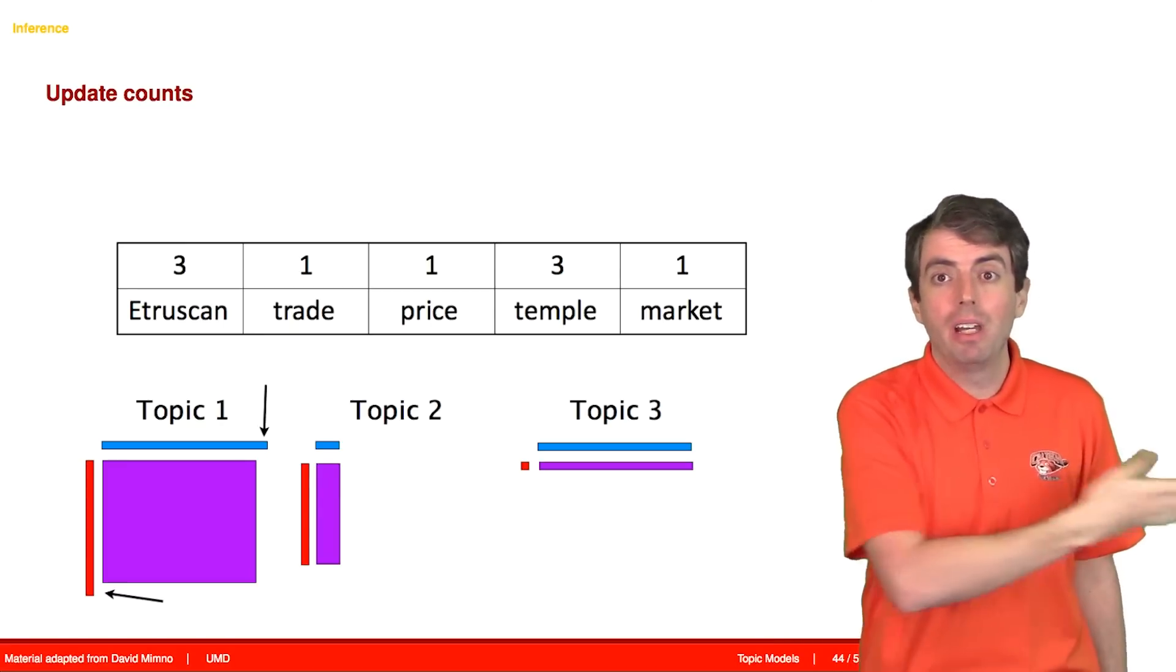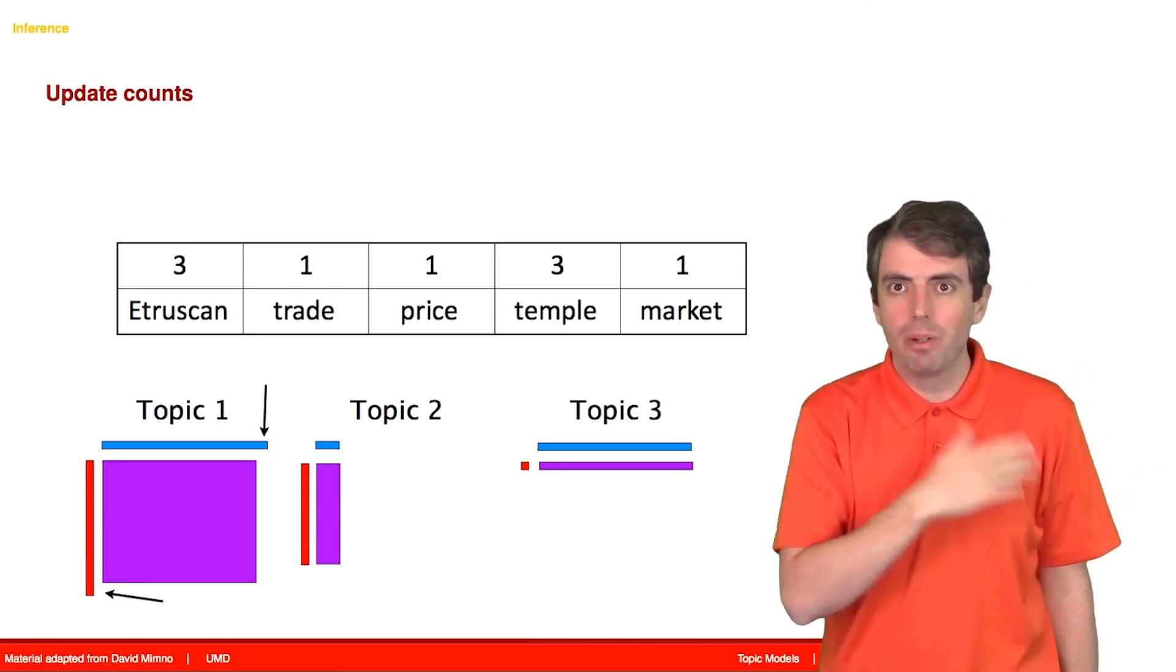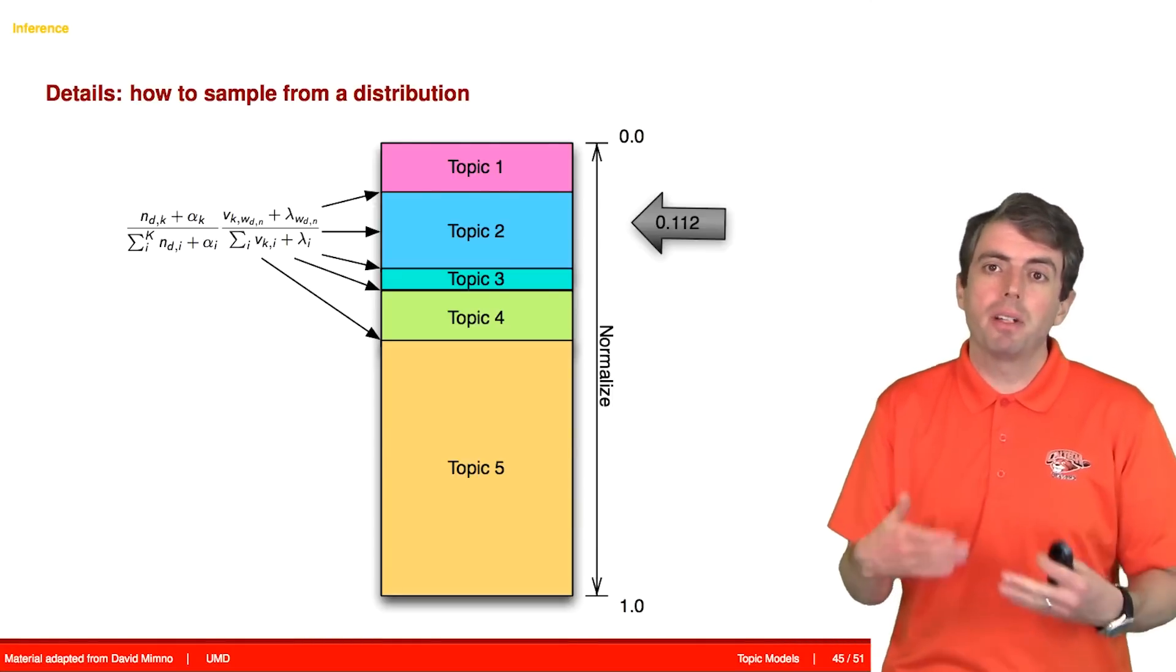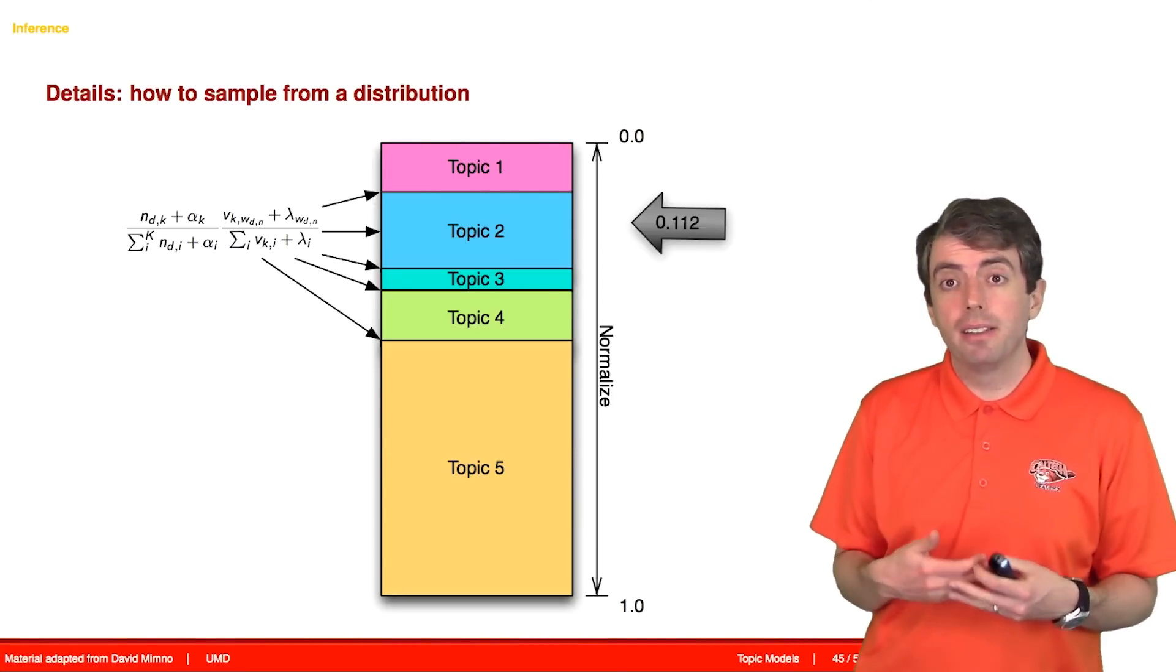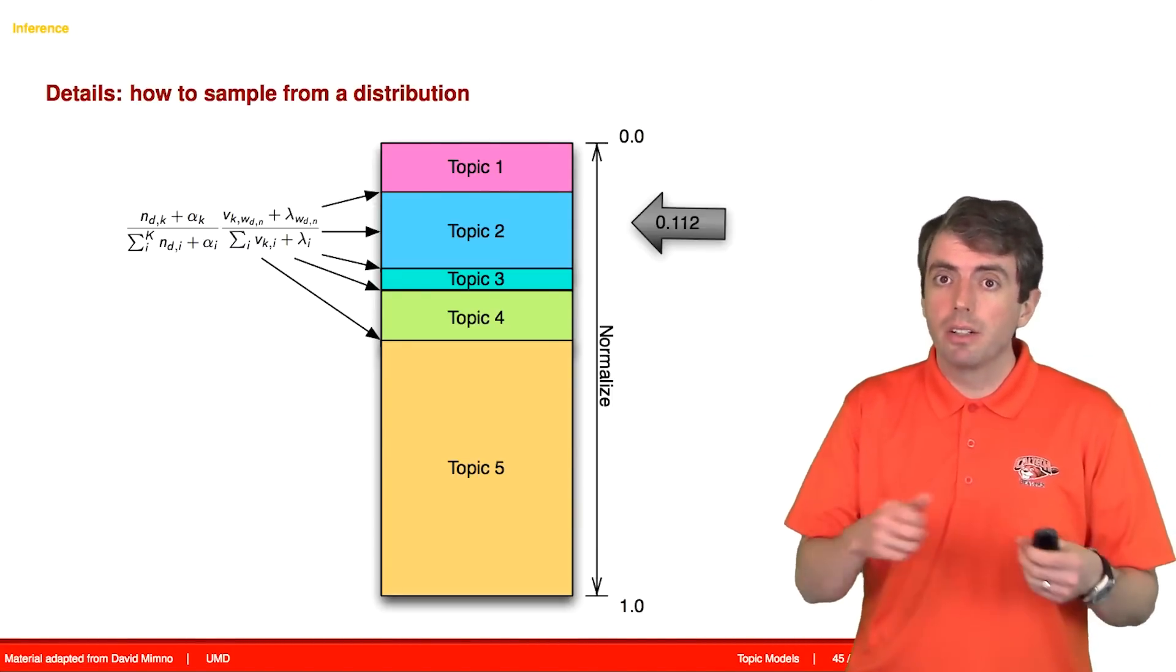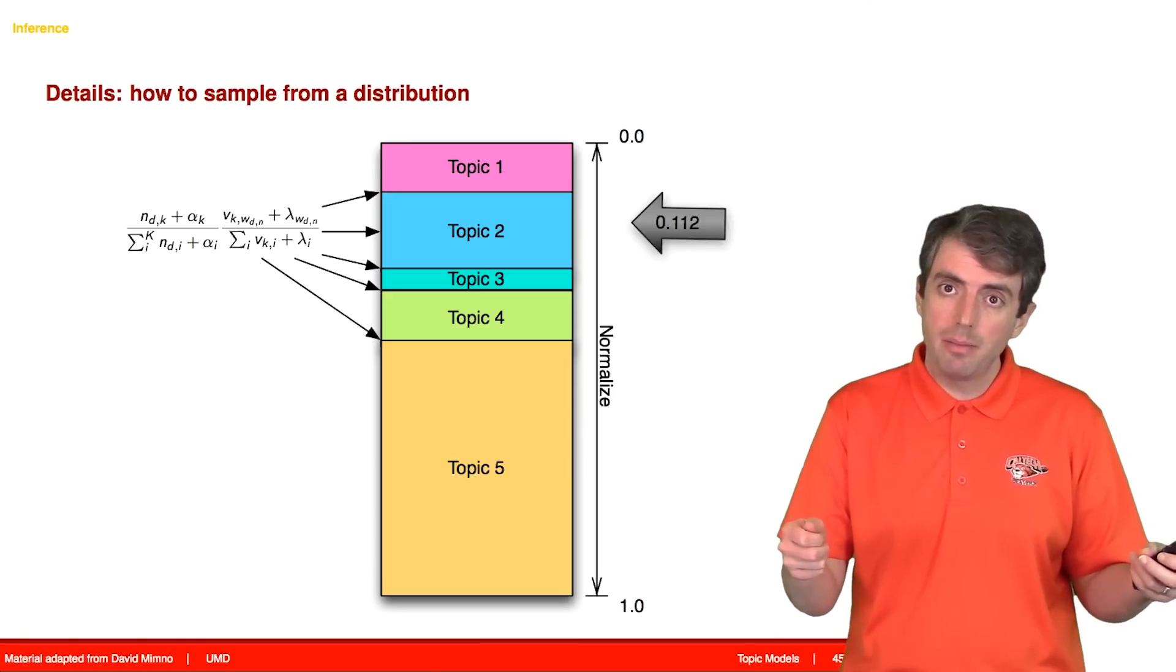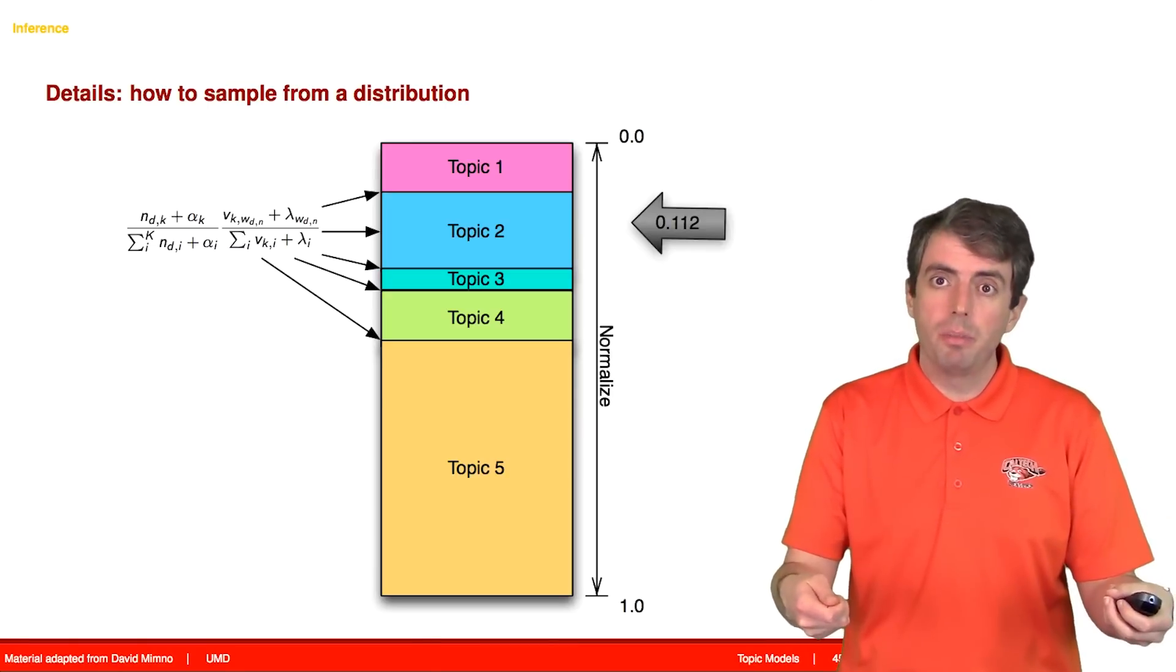So in the future, topic 1 would have been more likely than it was before. When you select a new topic for a word, this corresponds to sampling from a multinomial distribution. You're going to compute this k-dimensional vector, you'll then normalize it so it sums to 1, and then you're going to make a draw from that multinomial distribution.